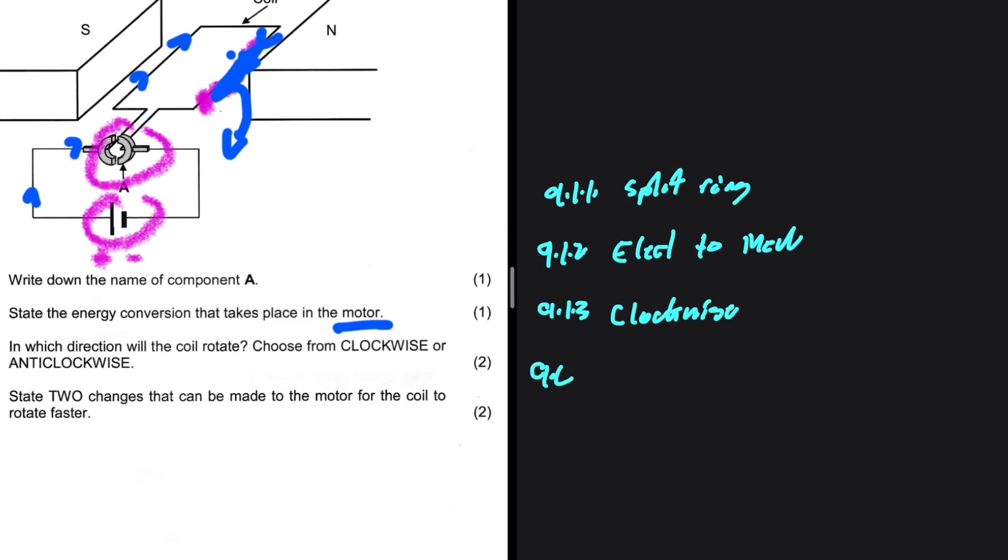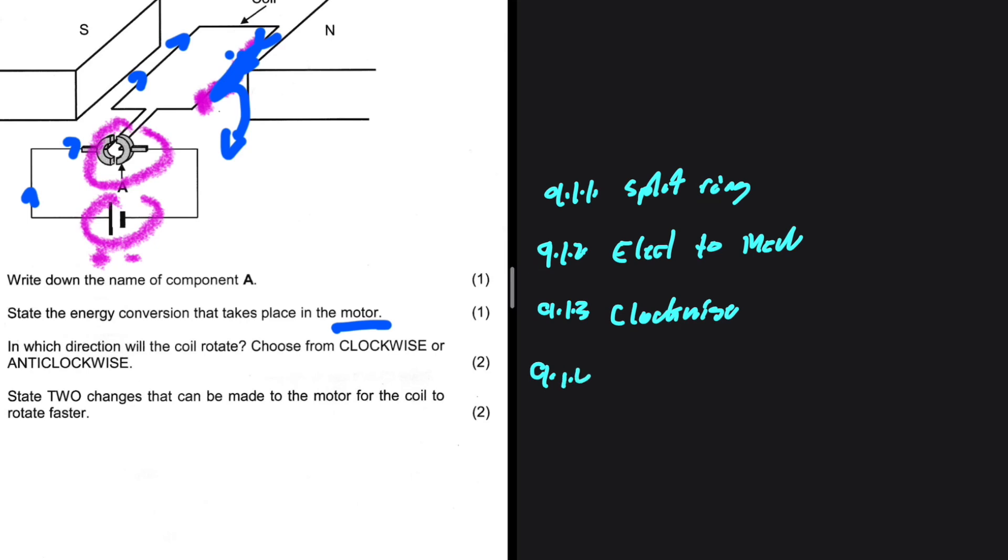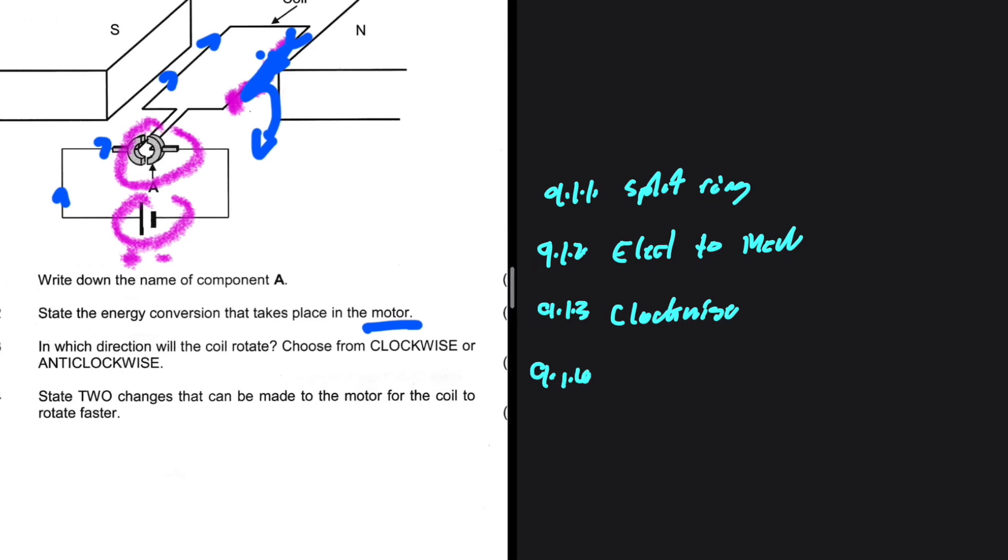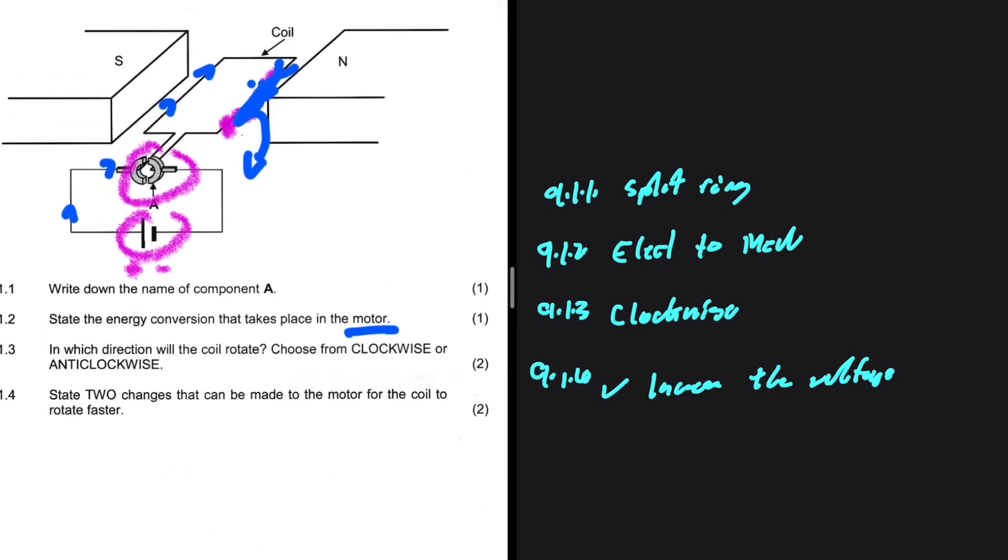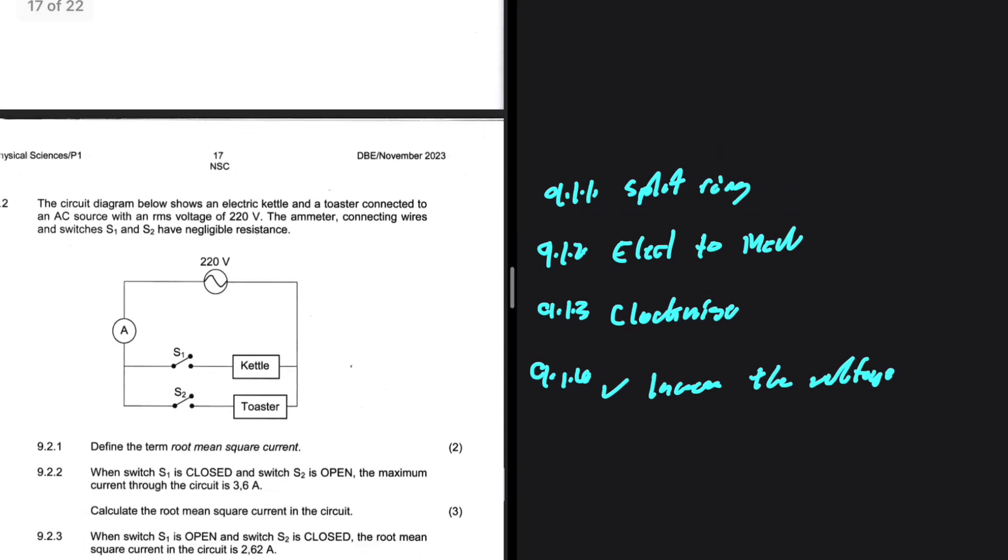9.1.4, state two changes that can be made to the motor for the coil to rotate faster. I can increase the voltage. If you increase the voltage, the coil will go faster. So that's one of the things you can do. I want you guys to tell me what reasons you gave. I'm saying I'm going to increase the voltage. What did you say in the exam? Let me know in the comments. I'll be checking it out.